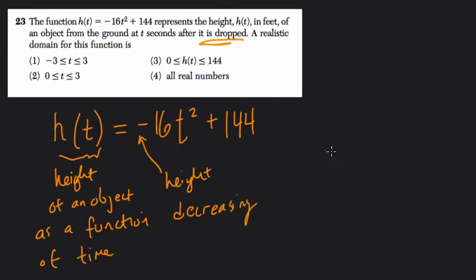think about what it's saying. It's saying that the item is being dropped. So let's say we have this item right here and it's being let go. It's going to fall downward. Gravity will pull it downward. So we expect that over time the height of this object is decreasing.